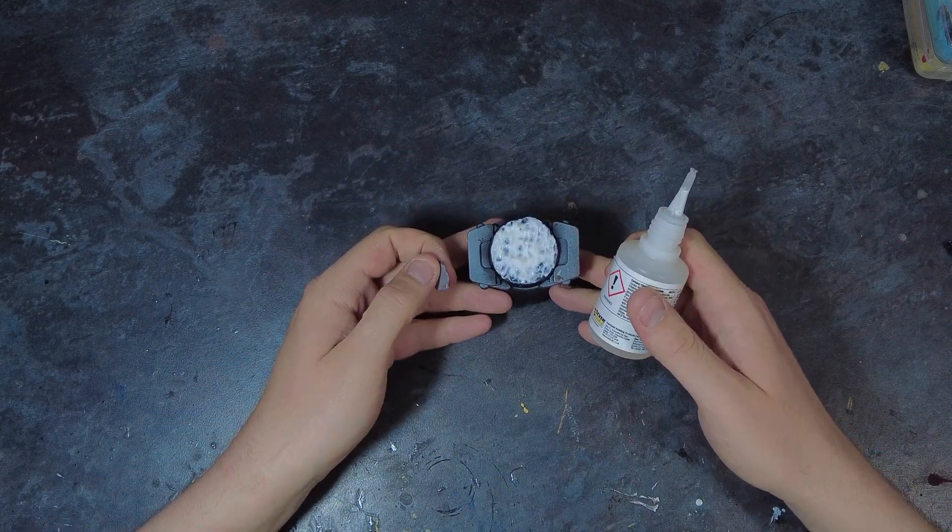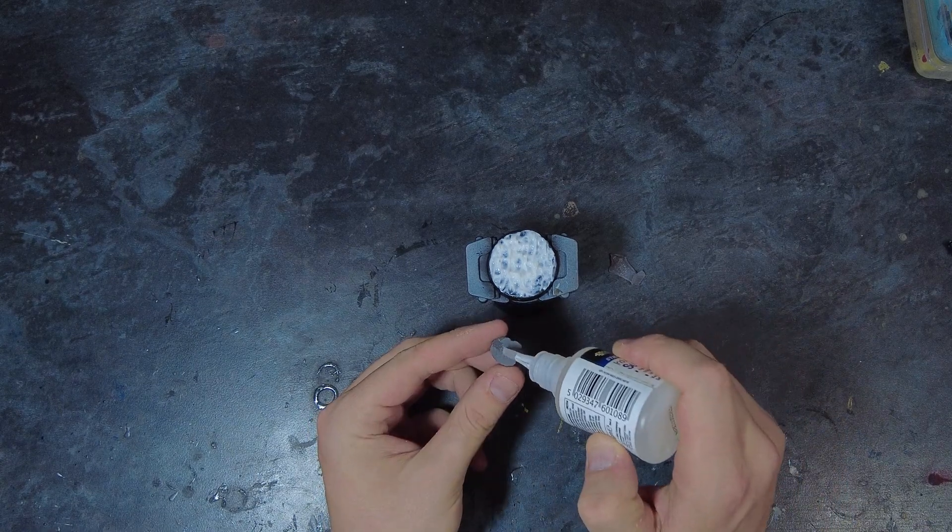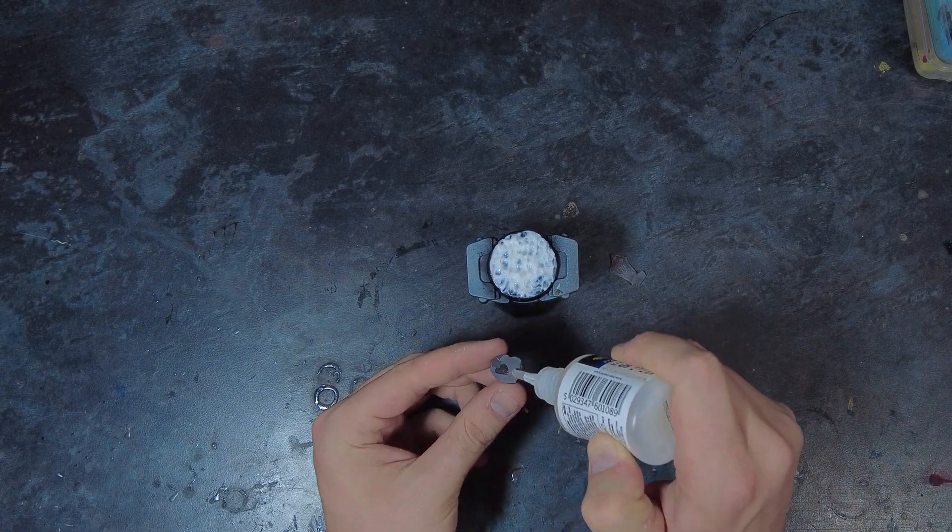Once this is applied, we can look at adding the rocks. So here we want to take our chosen rocks, whether it's cork, slate or other natural forms, and sand the base of these pieces. This should help to make sure that there is a flush mounting point for the rocks to the base itself. With these flush bottoms sorted, we can apply a little bit of super glue and push these rocks into our chosen positions on the base.